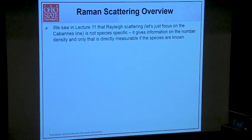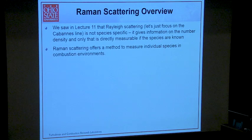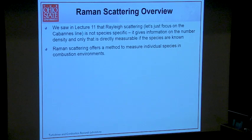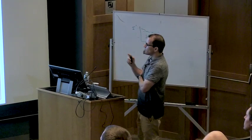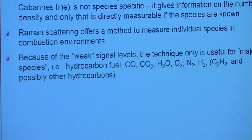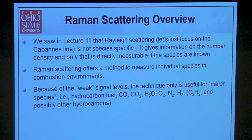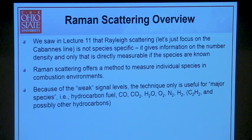We're now very familiar with Rayleigh scattering — it's not species-specific and gives us only information on number density. But Raman scattering actually gives us an opportunity to measure individual species in combustion environments, at least simple species. For major species, it's typically about a factor of 1000 or more weaker than Rayleigh scattering, so you need a lot of the molecule present. Typically you can see fuels and all the major species.